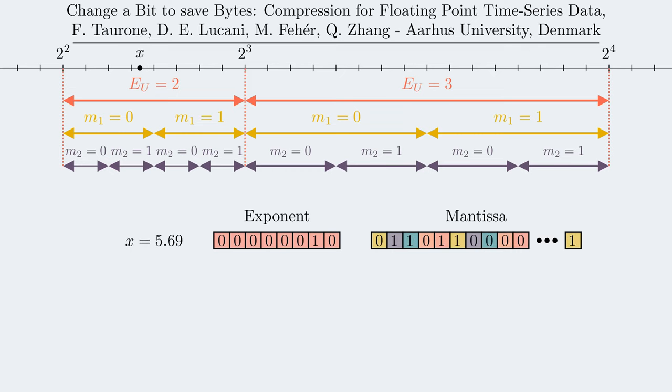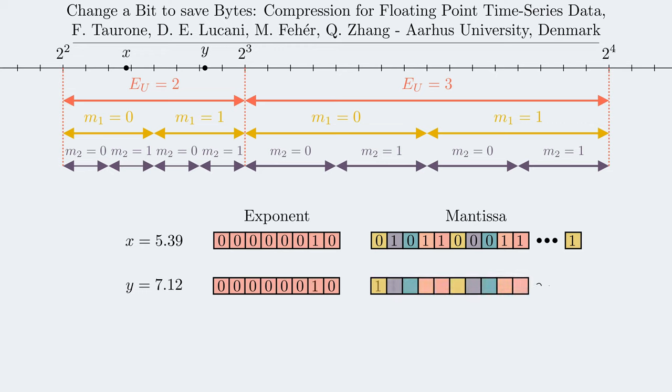If we now introduce a second number y, the question is: is there a way to guarantee that x and y will share some bits, so to use deduplication for compression? For example, if we look at the most significant bit of the mantissa, x and y have different binary values for it.